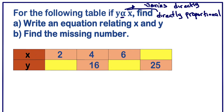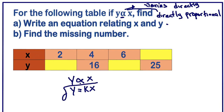This symbol represents 'varies directly', or we can use the word 'directly proportional'. We are asked to write an equation of y in terms of x. So y varies directly as x. To write the equation, this proportionality symbol should be replaced with equals, and we write y equals kx. We cannot solve with the proportionality symbol, so we change it to y equals kx.